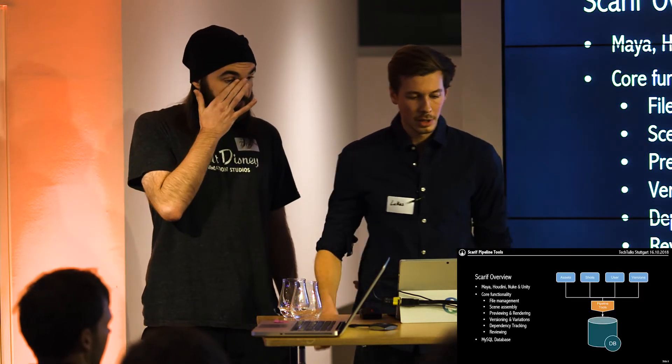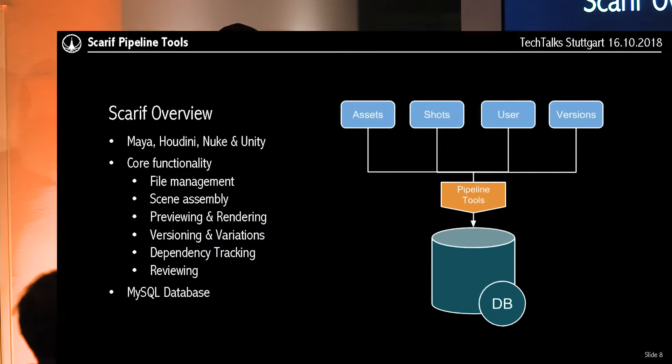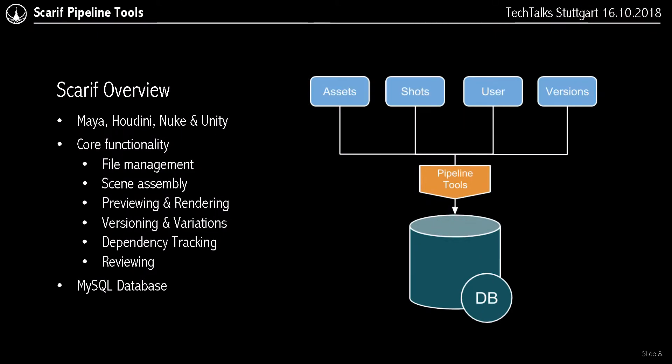A quick overview of the pipeline itself and some features: we support Maya, Houdini, Nuke, and Unity. The core functionality includes file management, scene assembly, previewing and rendering, versioning, variations, dependencies, and a good review pipeline. The backbone of it all is our MySQL database.